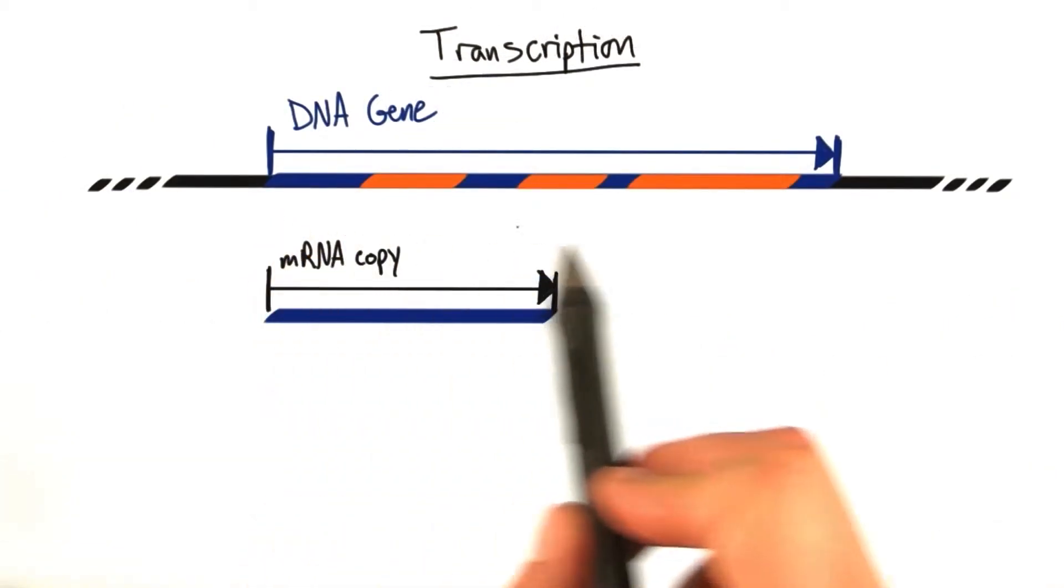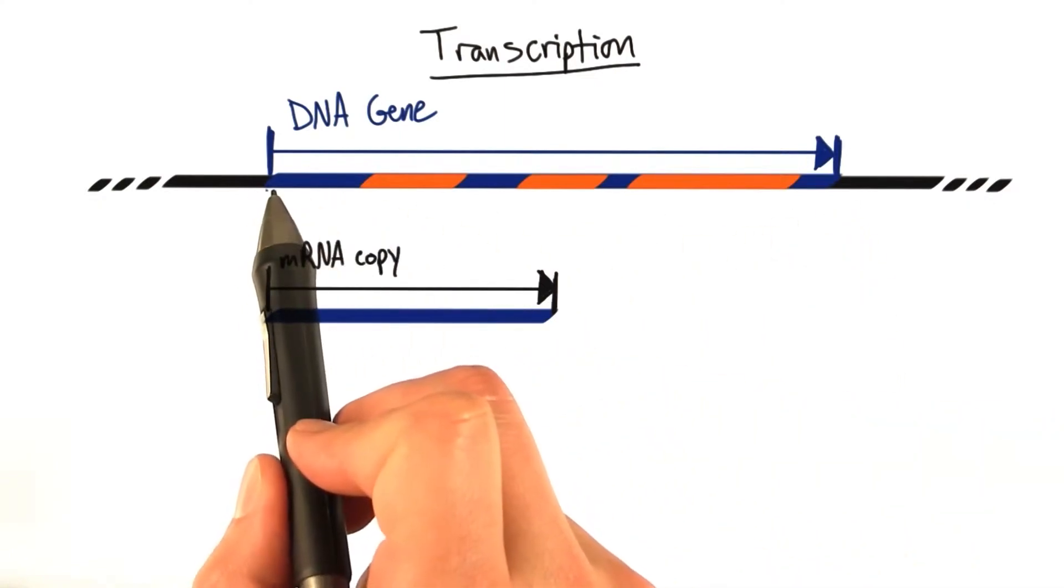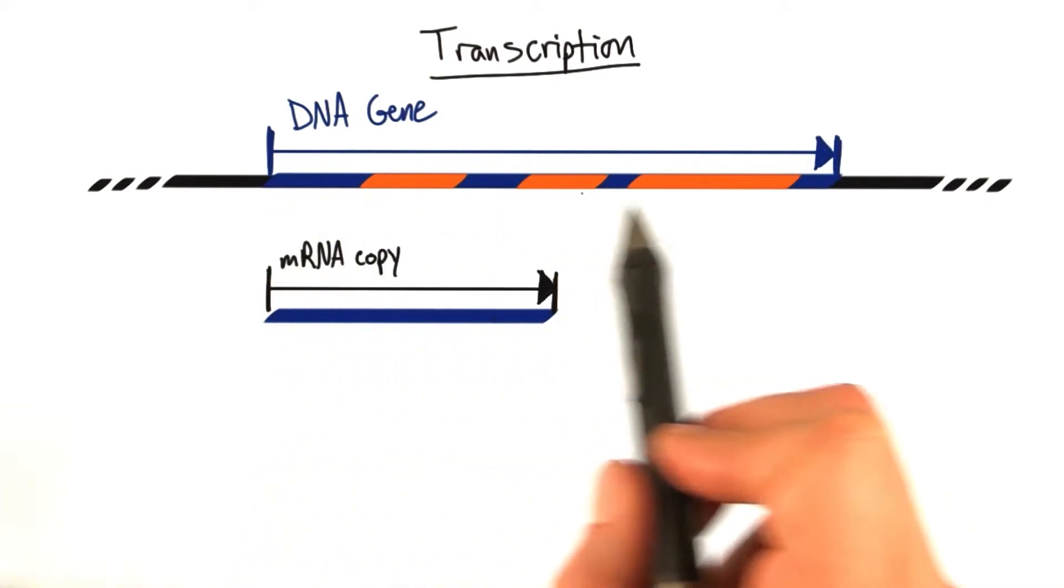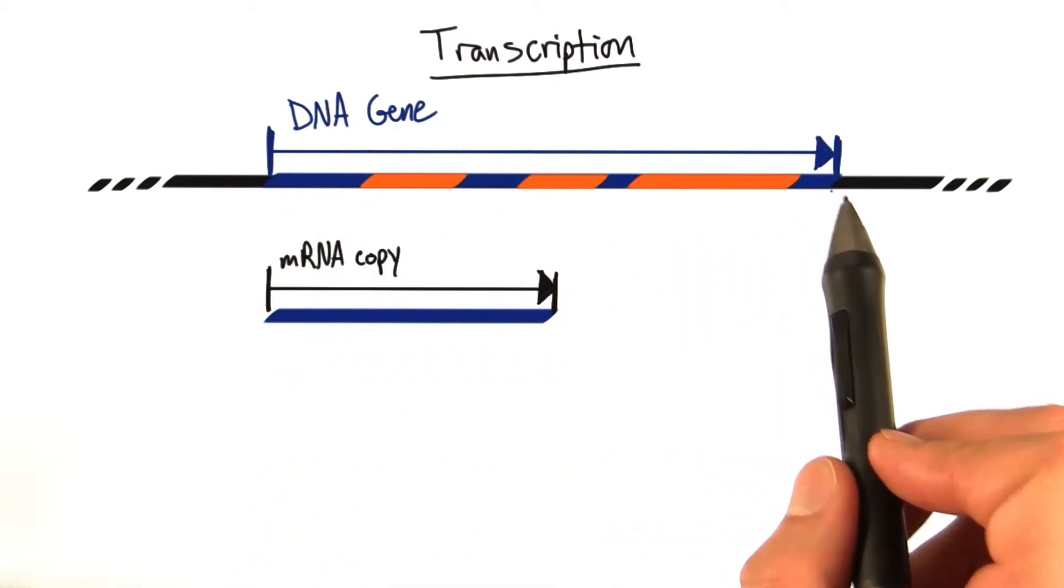So if we take a look at the DNA gene as a whole, from start to stop, this is where transcription started, and this is where transcription end. This was the full length of the DNA gene that we wanted to transcribe and eventually turn into protein.